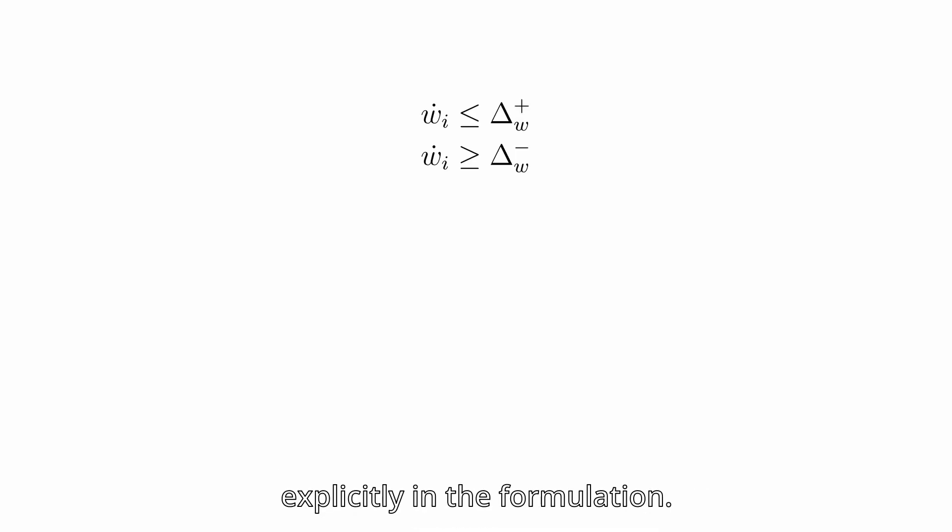Here is a useful feature which is enabled by having the association weights appearing explicitly in the formulation. By imposing these two constraints, we can limit the rate of change of the weights. By choosing the upper and lower limits appropriately, we can extend the duration of the pick-and-place actions.